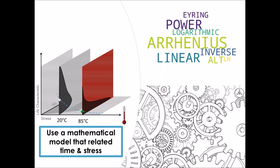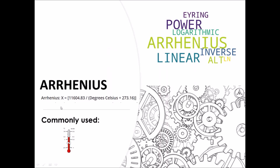Basically, this is always about how to create mathematical models. In this example we have the normal usage of a product and then we are accelerating the aging of the product in a way that we get failures faster, and then we create a model to extrapolate the usage back to normal levels. There are different types of regression models for doing this.